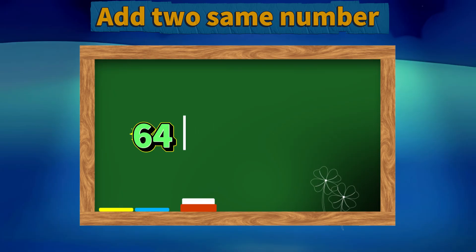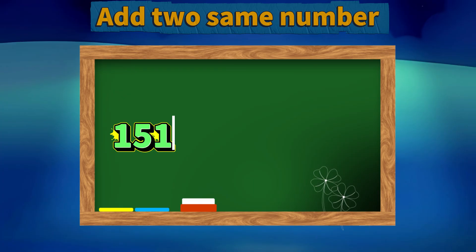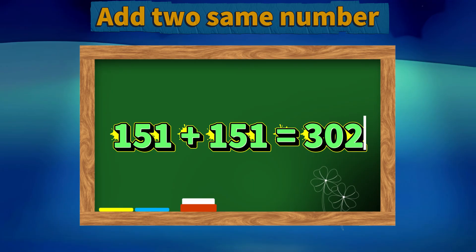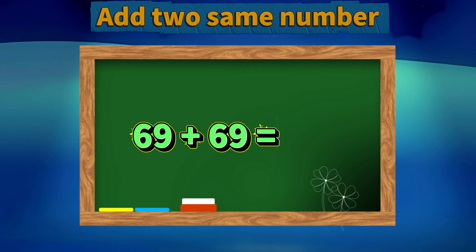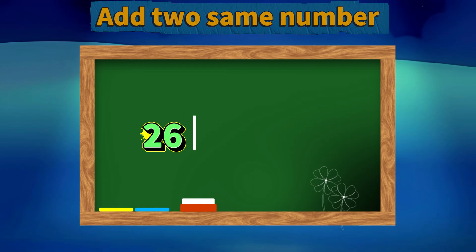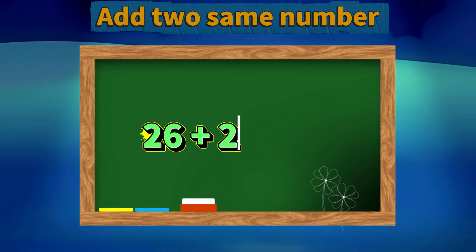64 plus 64 equals 128. 151 plus 151 equals 302. 69 plus 69 equals 138. 26 plus 26 equals 52. 25 plus 25 equals 50.